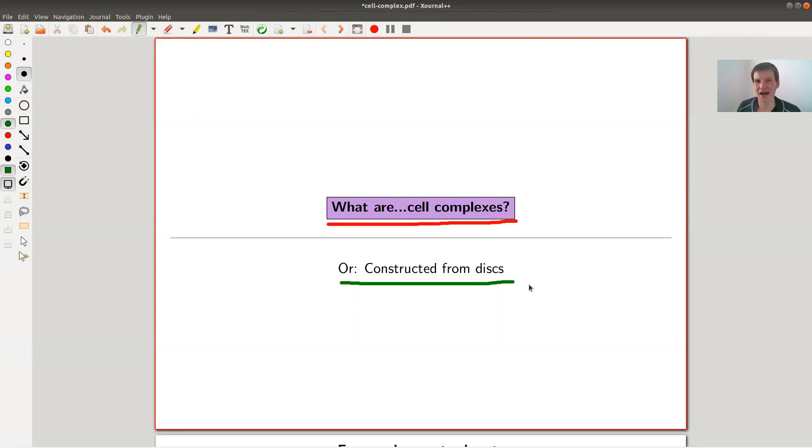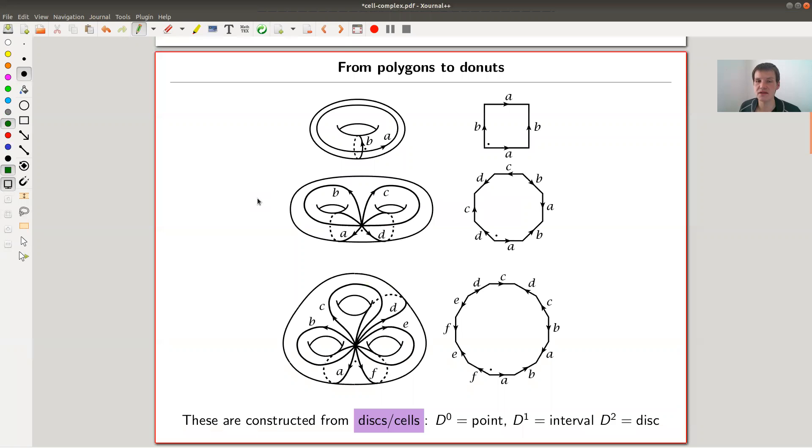Strictly speaking, I'll actually look at what people would call a finite dimensional cell complex or finite cell complex, imposing finiteness conditions, because I want to think of those examples. So I want to go from polygons to donuts. How does it work? There's a standard construction how to construct a donut, the torus.